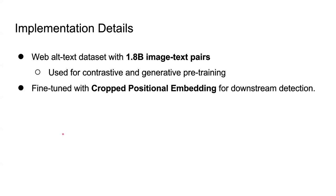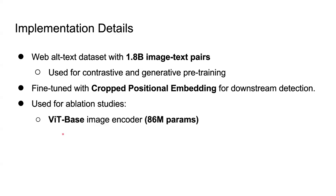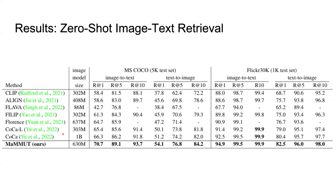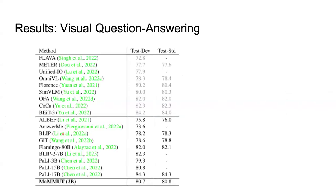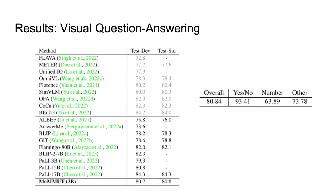For downstream open vocabulary object detection, the model was equipped with Mask R-CNN heads and box-agnostic class heads, and fine-tuned with the crop positional embedding. For ablation studies, the image encoder and text decoder were downscaled. In zero-shot image-to-text and text-to-image retrieval, compared with models of comparable size, MaMMUT yields state-of-the-art performance on MS COCO and Flickr30k datasets. In VQA, it achieves competitive performance despite other models having higher parameter counts, performing best on yes/no questions but not as well on counting questions.